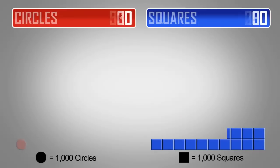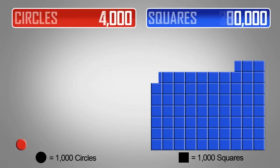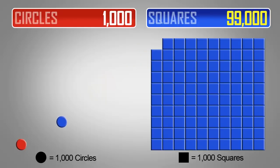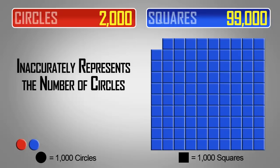A simple math equation can illustrate this. Let's say there are 1,000 circles and 100,000 squares, where each square and circle is the equivalent to 1,000. If just 1% of the squares are erroneously counted as circles, that's 1,000 squares now listed as circles. This mislabeling of squares would inaccurately represent the total number of circles by doubling their amount.